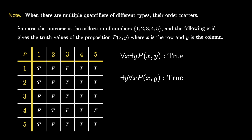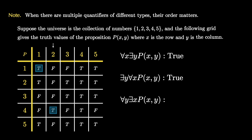Just to pound this home: those two statements were both true but for very different reasons. Now let's look at 'for all y there exists an x, P(x, y).' This says that in every column there must exist at least one true value. Going column by column: column 1 has a true value in position 1, column 2 in position 4, column 3 in position 2, column 4 in position 1, and column 5 in row 1. Since there's a true in every column, this proposition is true.